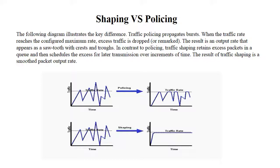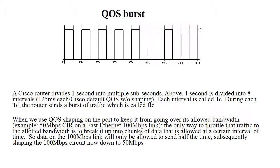We usually think of this as being about the bandwidth of the circuit. But when we create that config, we're also setting the burst rate. The way we make the burst rate limit the traffic is to prevent the traffic from being sent on the link half the time. So if we're preventing traffic transmission half the time on a 100 meg link, we're essentially throttling it down to 50 meg. And since we're talking about time, this is usually represented within one second. When QoS is added to the Cisco router, by default, we would have eight intervals of 125 milliseconds within that one second.